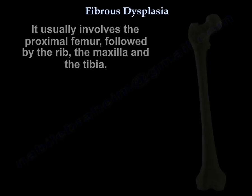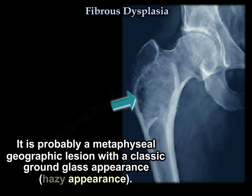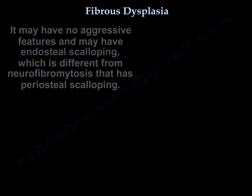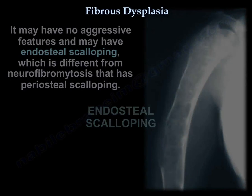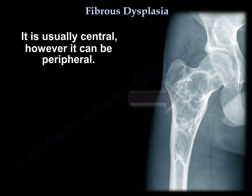It is probably a metaphyseal geographic lesion with a classic ground glass appearance — hazy. It may have no aggressive features, and it may have endosteal scalloping, different than neurofibromatosis, which has periosteal scalloping. It's usually central, but it can be peripheral.